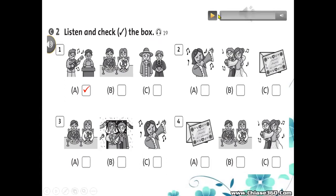Okay, one more time. Listening 19: listen and check the box. 1. What are they doing? They are playing music. 2. What are they doing? They are dancing. 3. What is she doing? She is singing. 4. What are they doing? They are eating. Okay, finish.